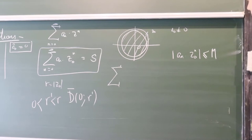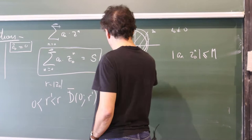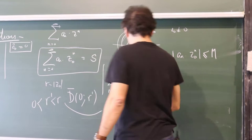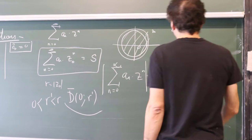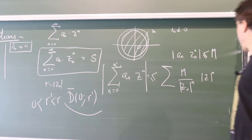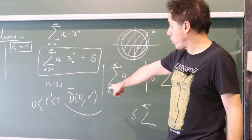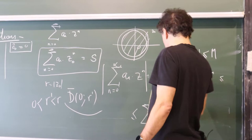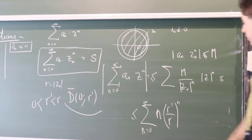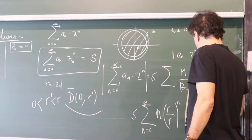So |aₙ| is bounded by M. For z in the smaller closed disk of radius r' < r = |z₀|, we can bound |aₙzⁿ| ≤ M · (r'/r)ⁿ, and this is a convergent geometric series since r' < r.